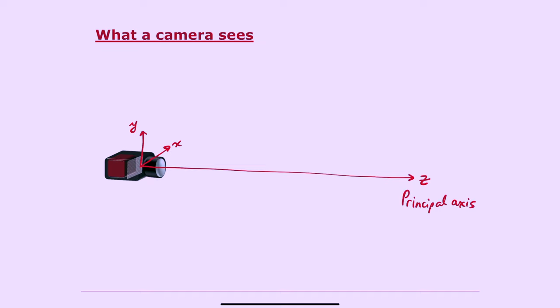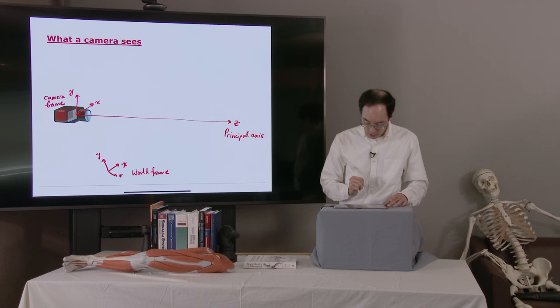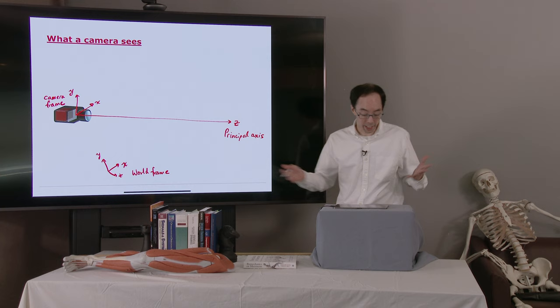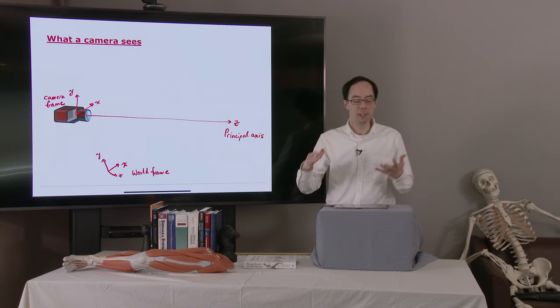There's also a frame fixed in the world. X, Y, Z. We'll call this the world frame. Keep in mind, what we actually want are the coordinates of points relative to the world frame. What we're going to be learning is information about the points relative to the camera's frame. We'll have to do some additional work to do that transformation into the world frame, and we'll get there in a few minutes.